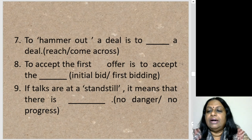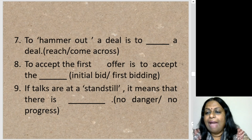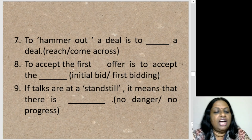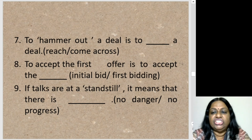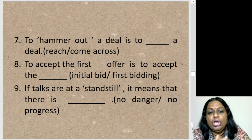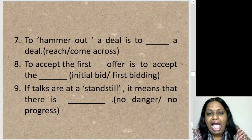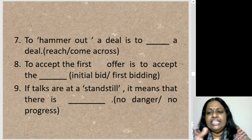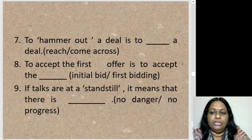Sentence seven: 'To hammer out a deal is to blank a deal.' The answer is 'reach a deal.' That is, you have a lot of negotiation, hammering, talking through all the nitty-gritties and then arriving at a conclusion — reach a deal.